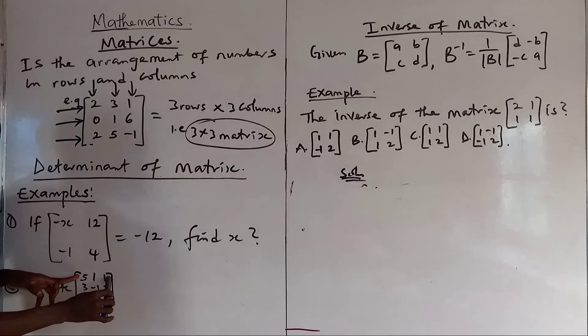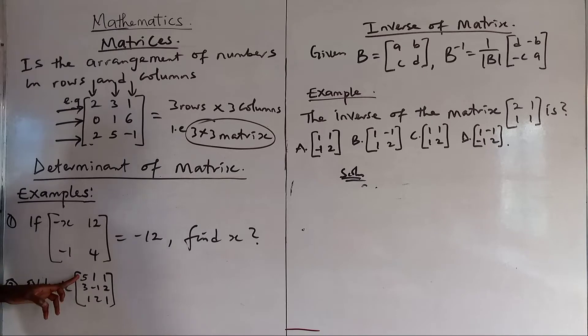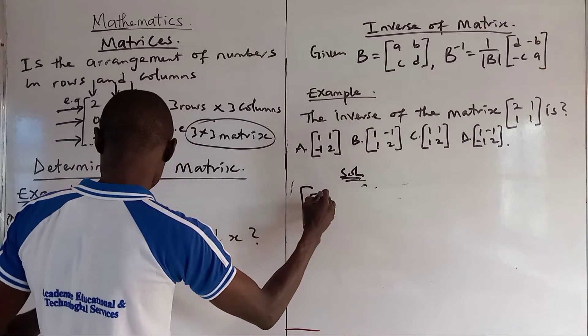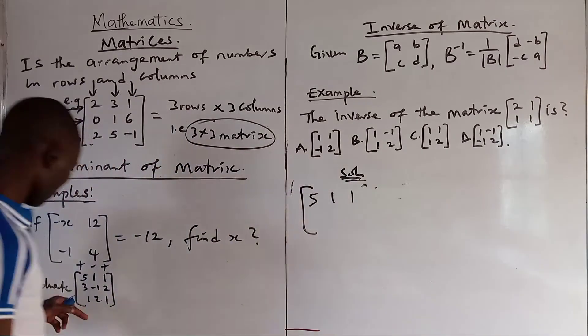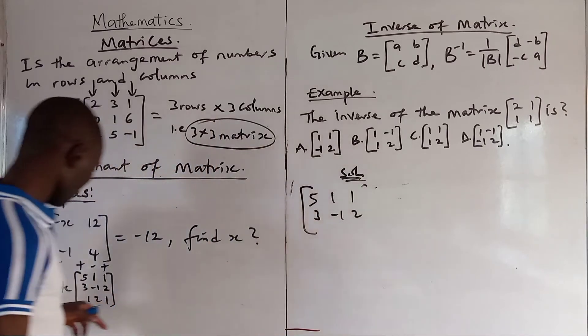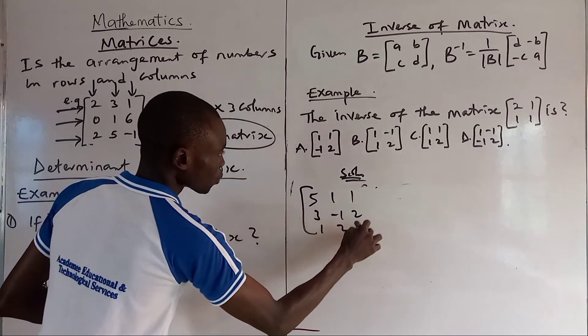How do we do that? We focus on the first row. We use it to get minor of these matrices. And as we are doing that, we apply plus, minus, plus. Pick 5 for instance. When you pick 5, let's transfer this question here so that we can explain. 5, 1, 1, 3, minus 1, 2, 1, 2, 1, 2, 1.